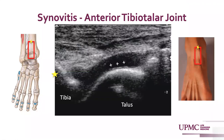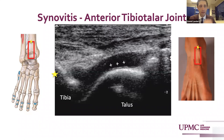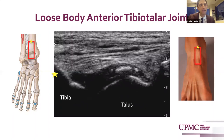Pathologically, a hypoechoic distension of the anterior capsule can represent an effusion or in this case a synovitis. Loose bodies can also be deposited in the anterior joint recess, indicated in this image with hypoechoic multifocal punctate structures, indicative of a cartilaginous or bony loose body.